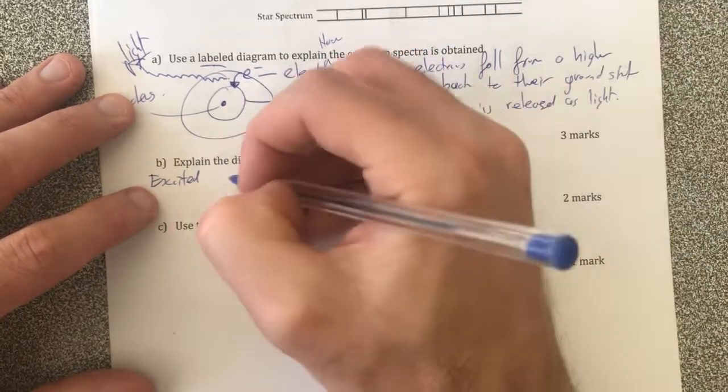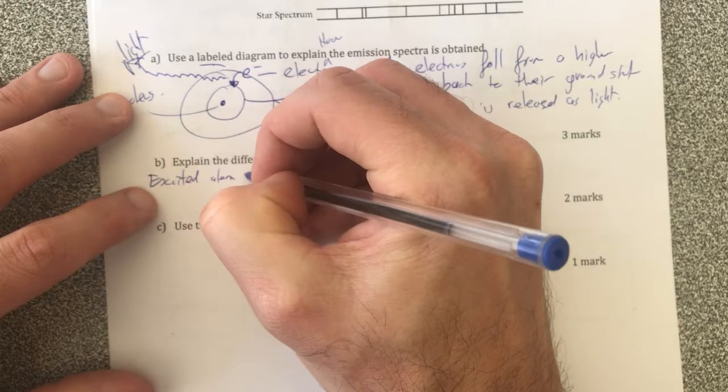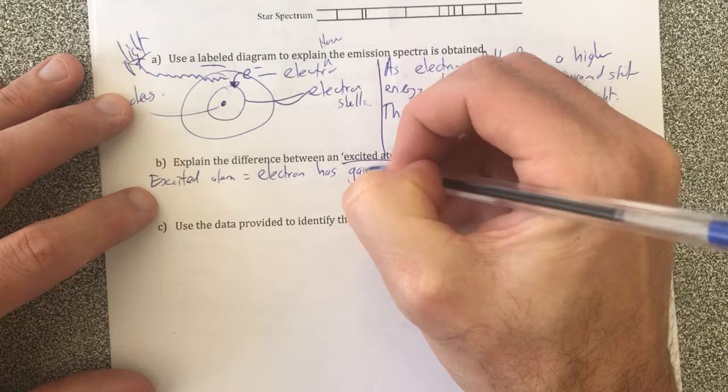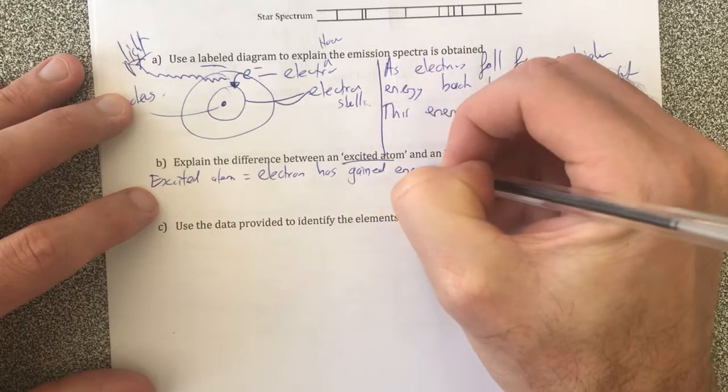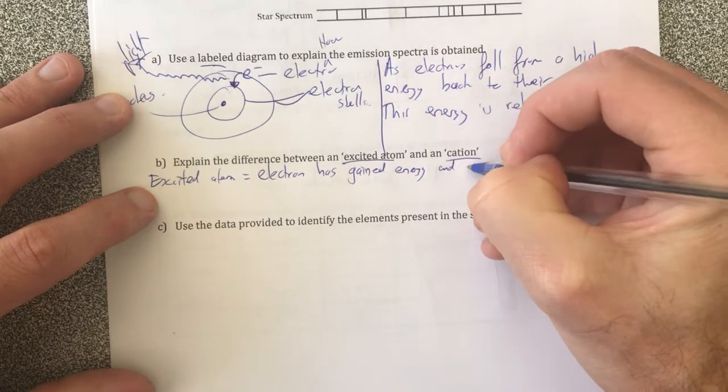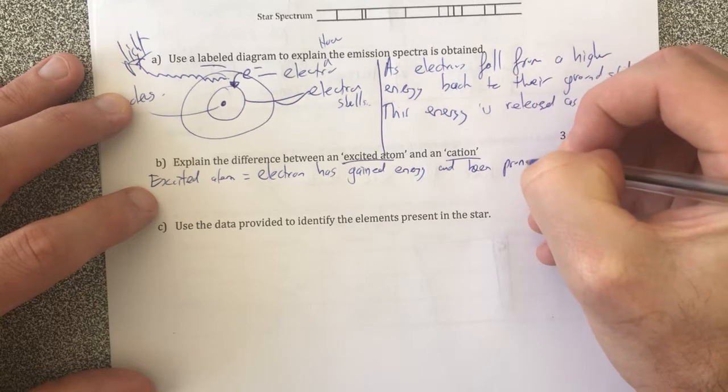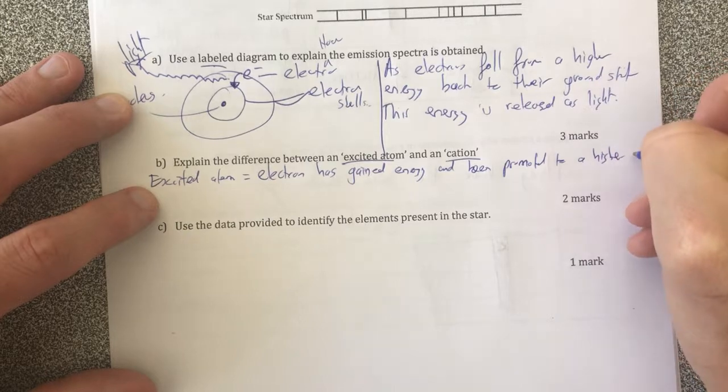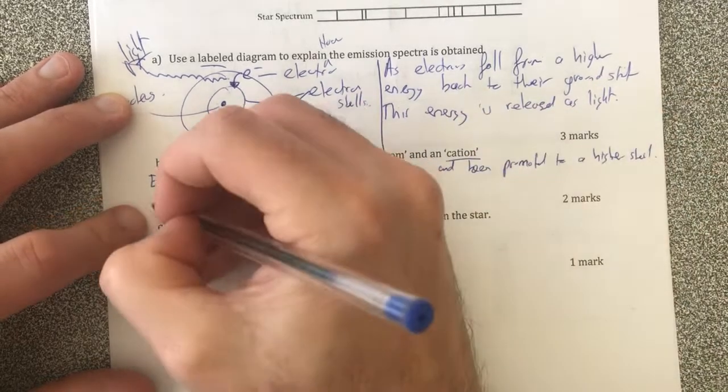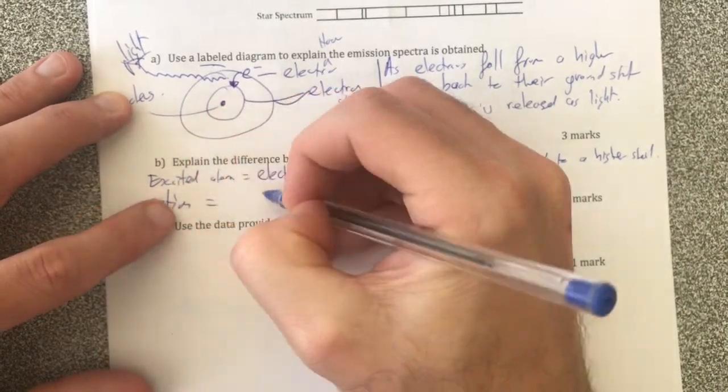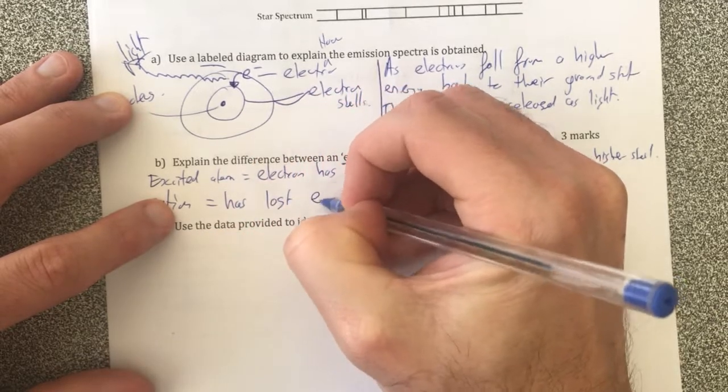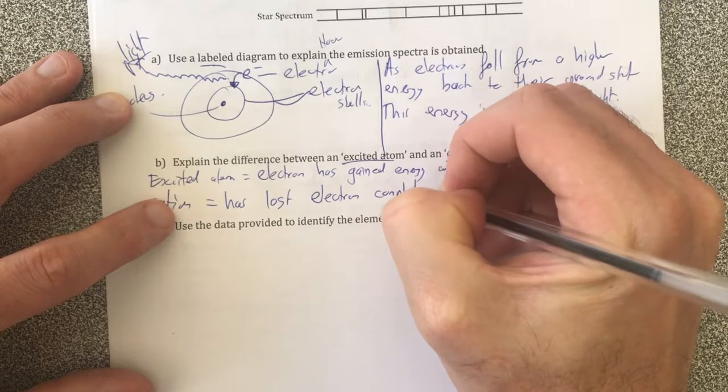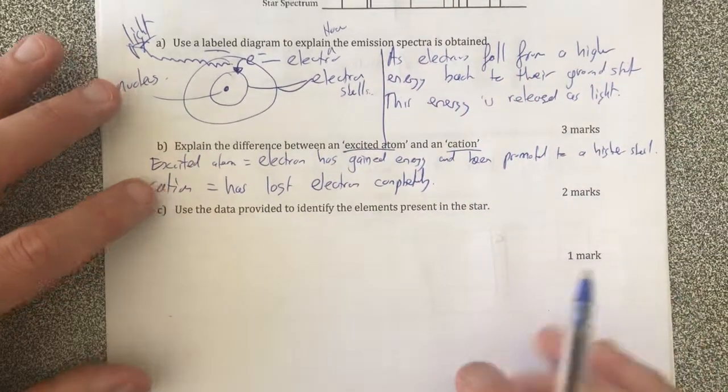So excited atom: the electron has gained energy and been promoted to a higher shell. A cation has lost electrons completely. Alright, so therefore that's the difference.